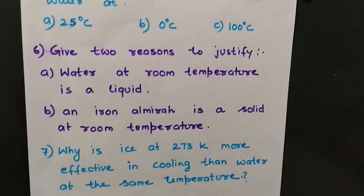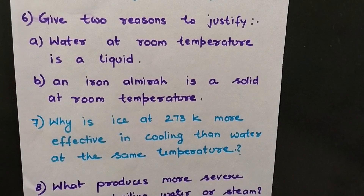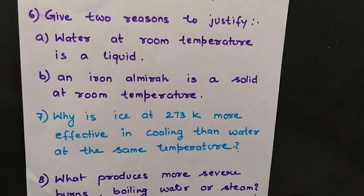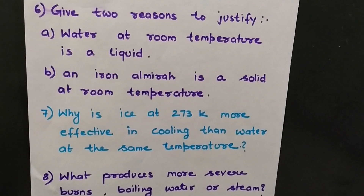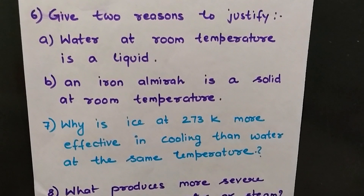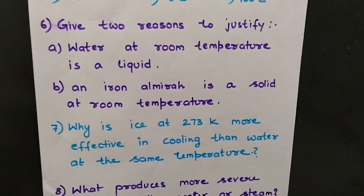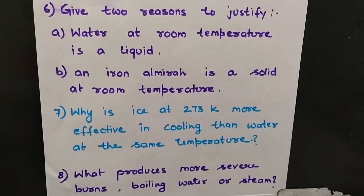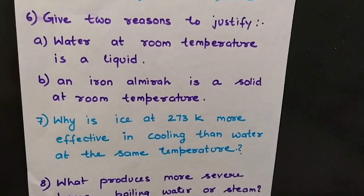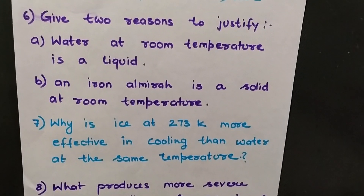Question 6: Give two reasons to justify that water at room temperature is a liquid. Water can flow from a higher level to a lower level; it has a fixed volume but no fixed shape — it takes the shape of the container in which it is kept; it is not significantly compressible; and it is not hard or rigid. You can write any two of these reasons to justify that water is a liquid at room temperature.